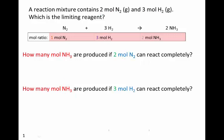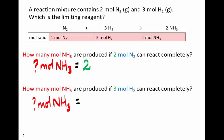And then the one that produces less is our limiting reagent. So how many moles of ammonia would be produced in each case? If we use up all the nitrogen, 2 moles of it, or all the hydrogen, 3 moles of it.